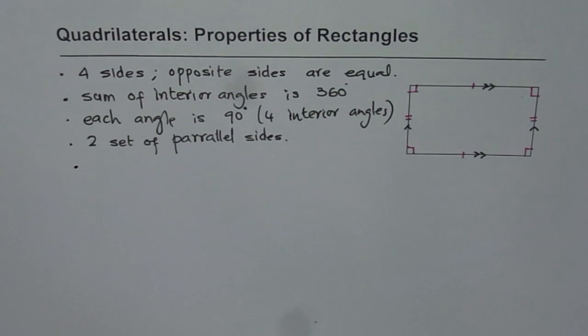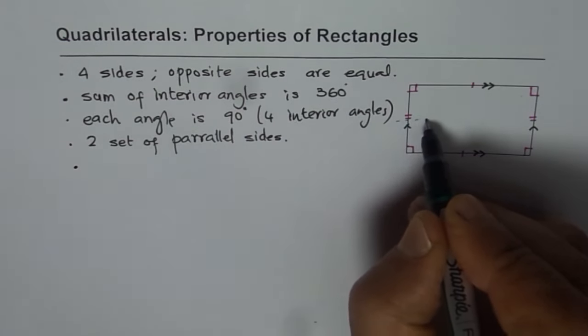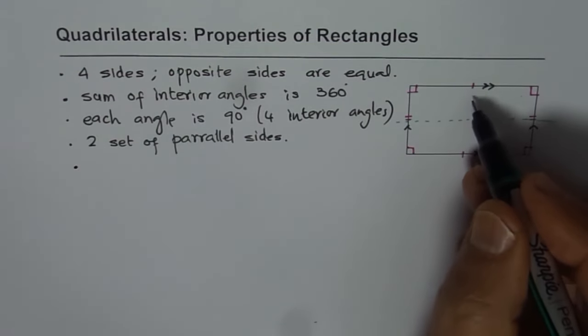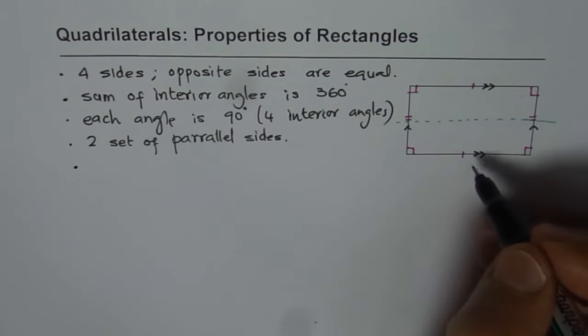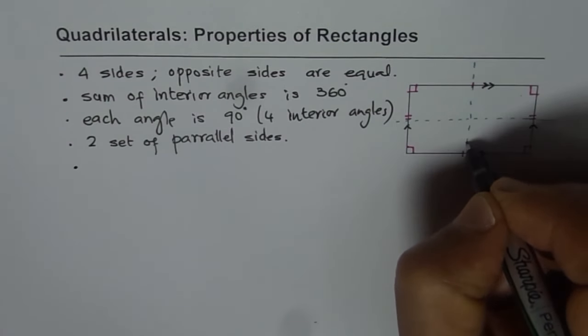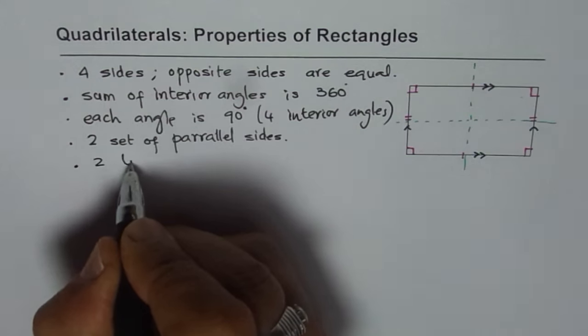Now, how many lines of symmetry does it have? Lines of symmetry means if I draw a horizontal line, for example like this, and fold it, it will overlap. So it has this line of symmetry. Even if I draw a vertical line and fold it, then it overlaps. So it has two lines of symmetry.